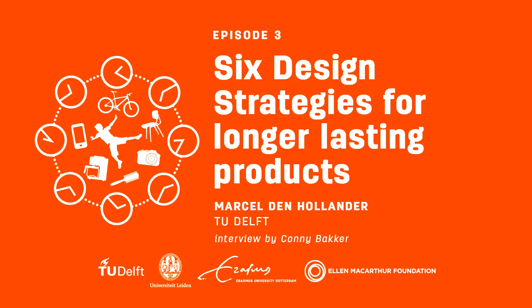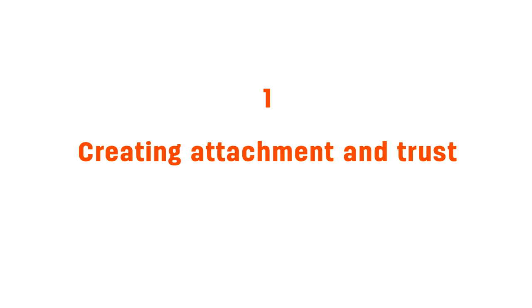You have identified six strategies for longer-lasting products. The first strategy is creating attachment and trust. That's one of the most important strategies, but also one of the most difficult to design for, because it's very hard to design a product that you beforehand know people will get attached to, like, or love — because that's the essence of product attachment. But if it works, it can really mean that the user will hold on to a product for a longer time.